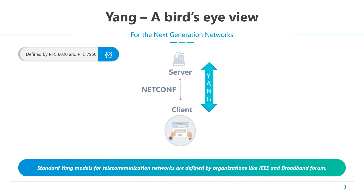Yang is defined by two RFCs, 6020 and 7950. 7950 is called Yang 1.1. It is a maintenance release of 6020. It resolves quite some ambiguities and faults that were existing in the original RFC.